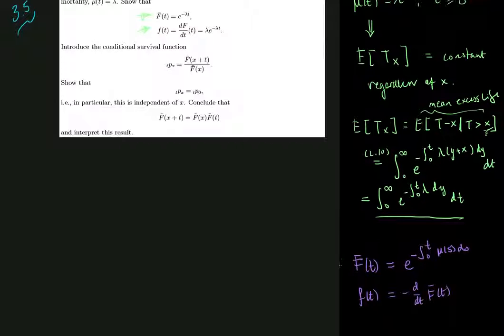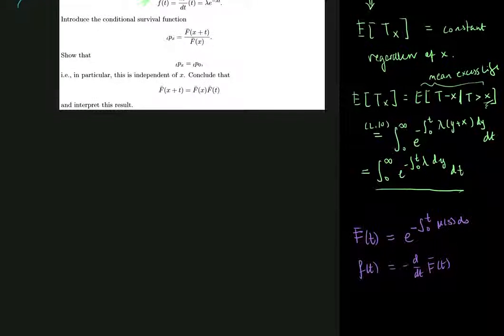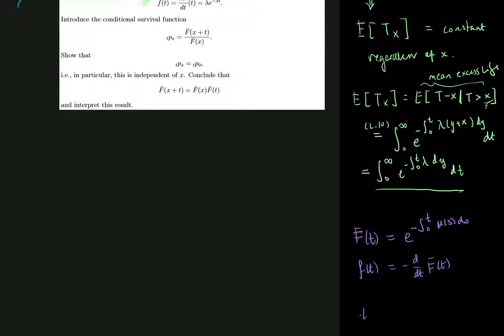Since the survival function is 1 minus the distribution function. Then we are asked to show that the conditional survival function of an x-year-old does not depend on the age x, so that no matter what age x we have, this equals the survival probability of a newborn.